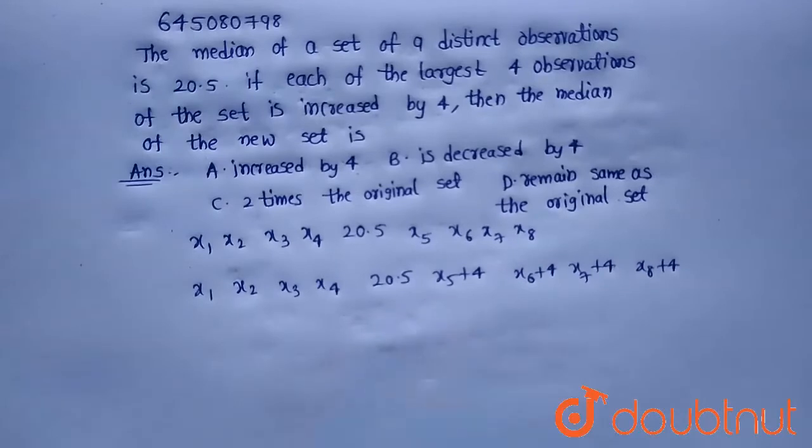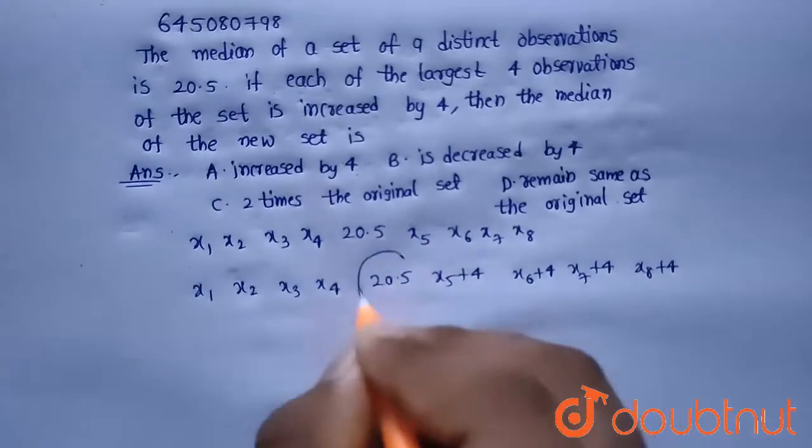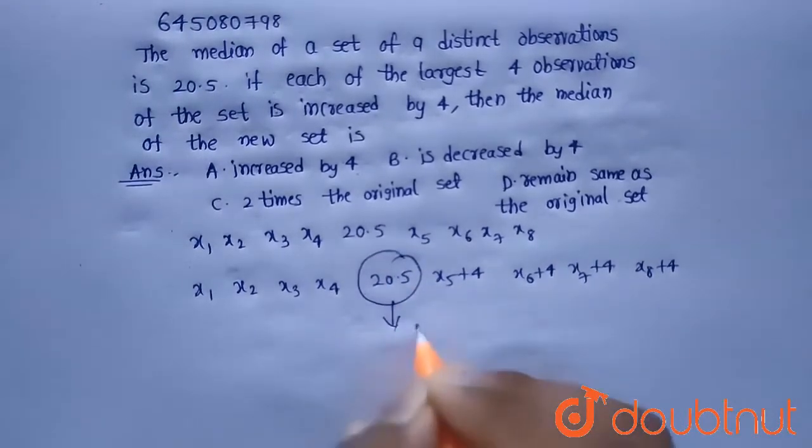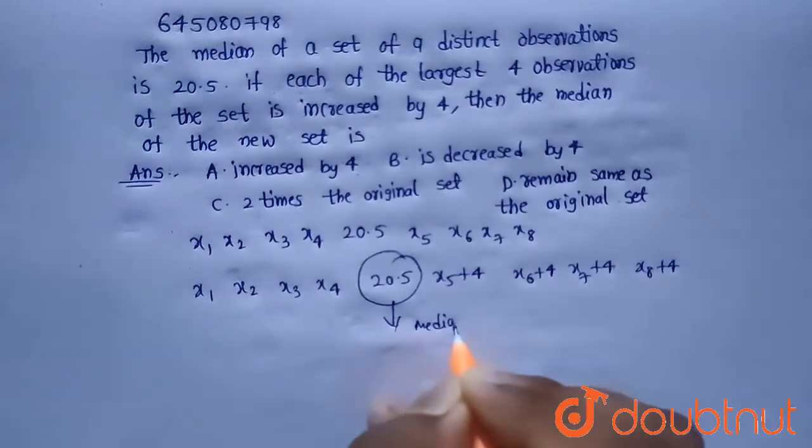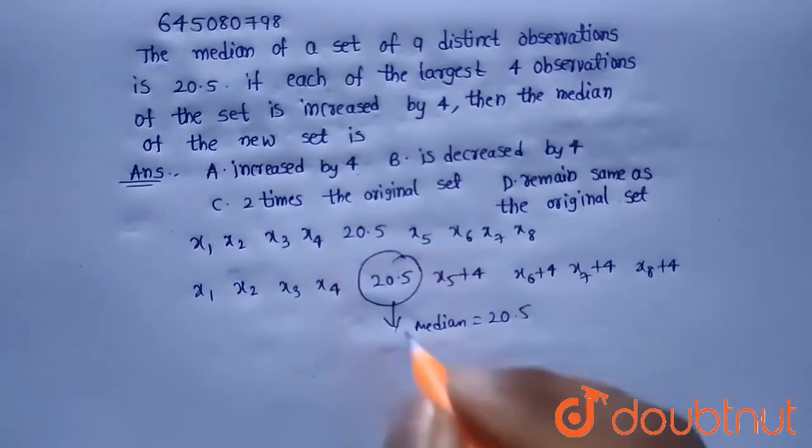Now the median is nothing but the middle observation. In this case, the middle observation is 20.5. So the new set median is 20.5 and the initial set median is 20.5.